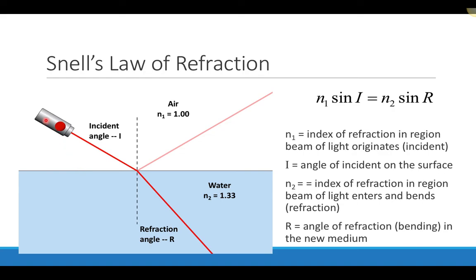We learned earlier that when light is incident from one medium and enters a second medium, the light tends to bend or refract. When light starts off in a region with a low index of refraction where it's traveling fast, the angle of incidence will be larger than the angle of refraction. The light bends towards the normal when it enters a region where the light is traveling slower and has a larger index of refraction.